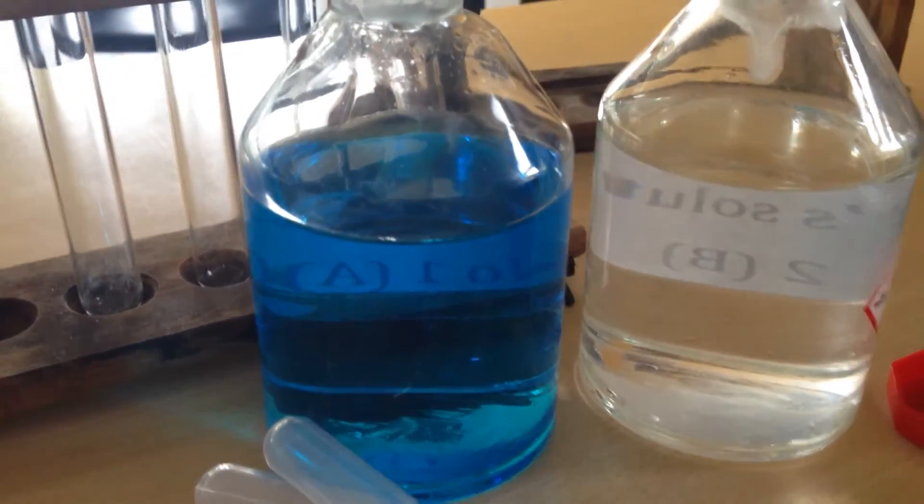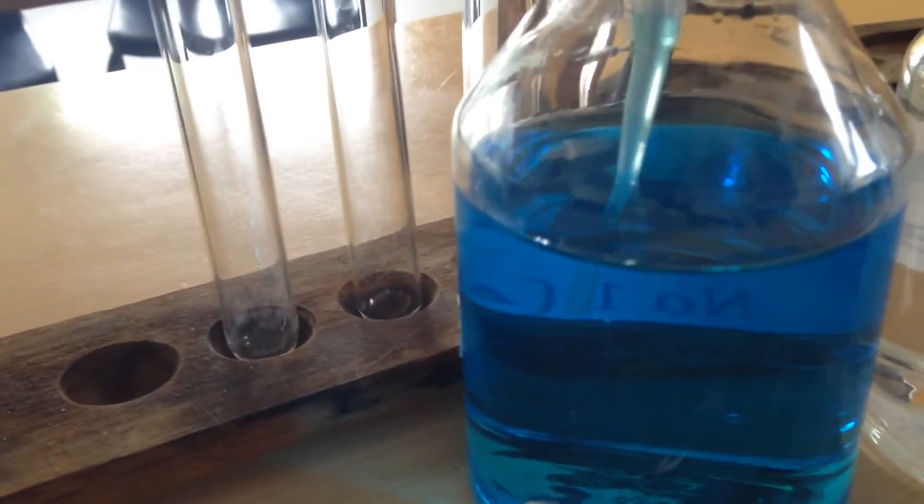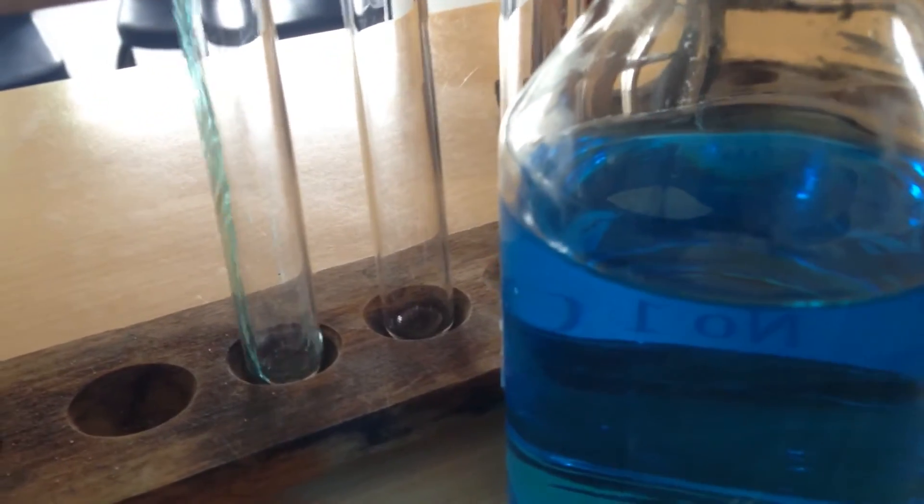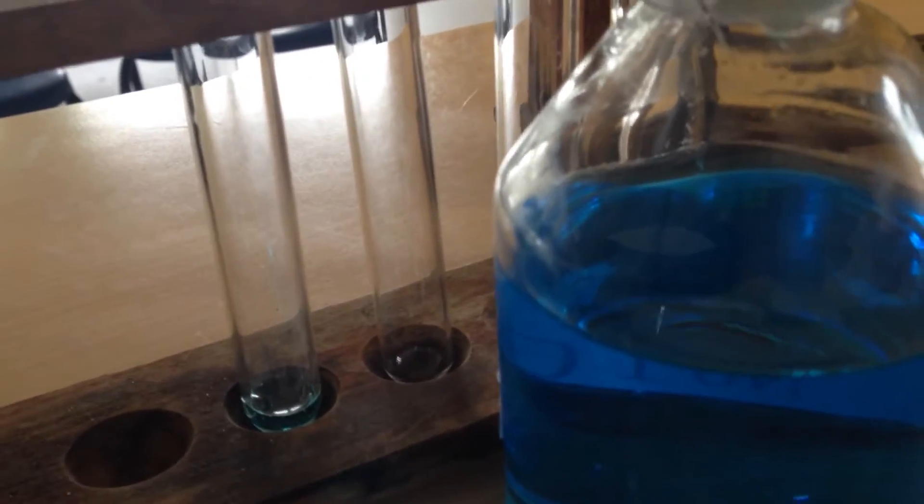This is going to be a test for an aldehyde. Here I have some Fehling's A and some Fehling's B solutions, and I'm just going to mix equal amounts of those to produce our Fehling's test reagent.